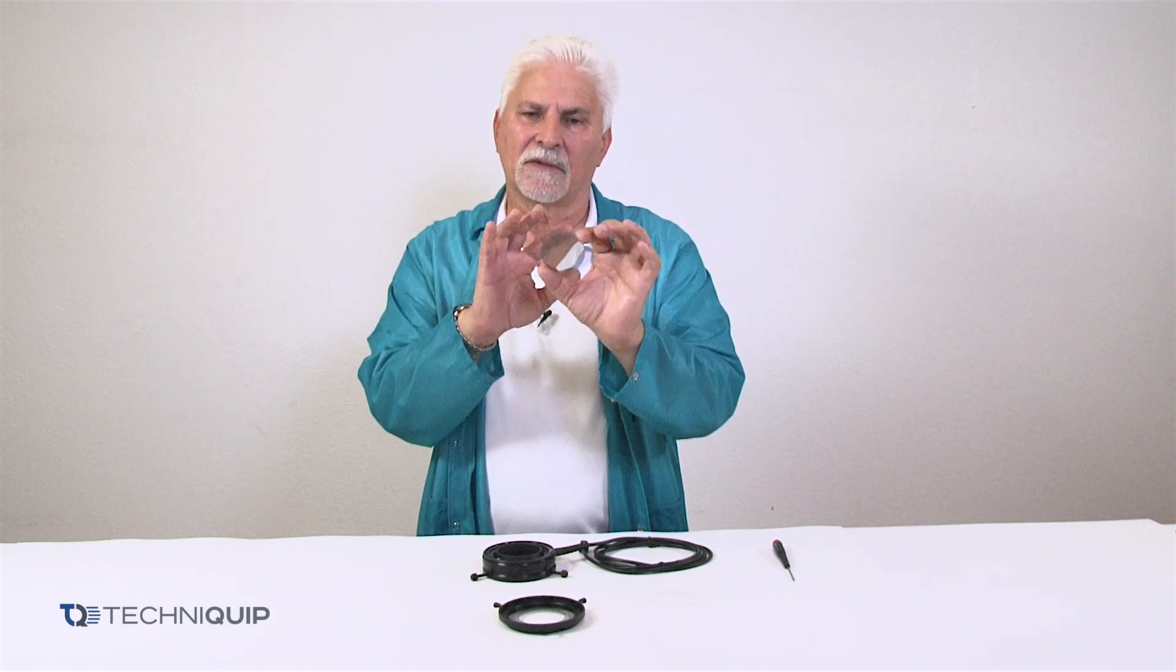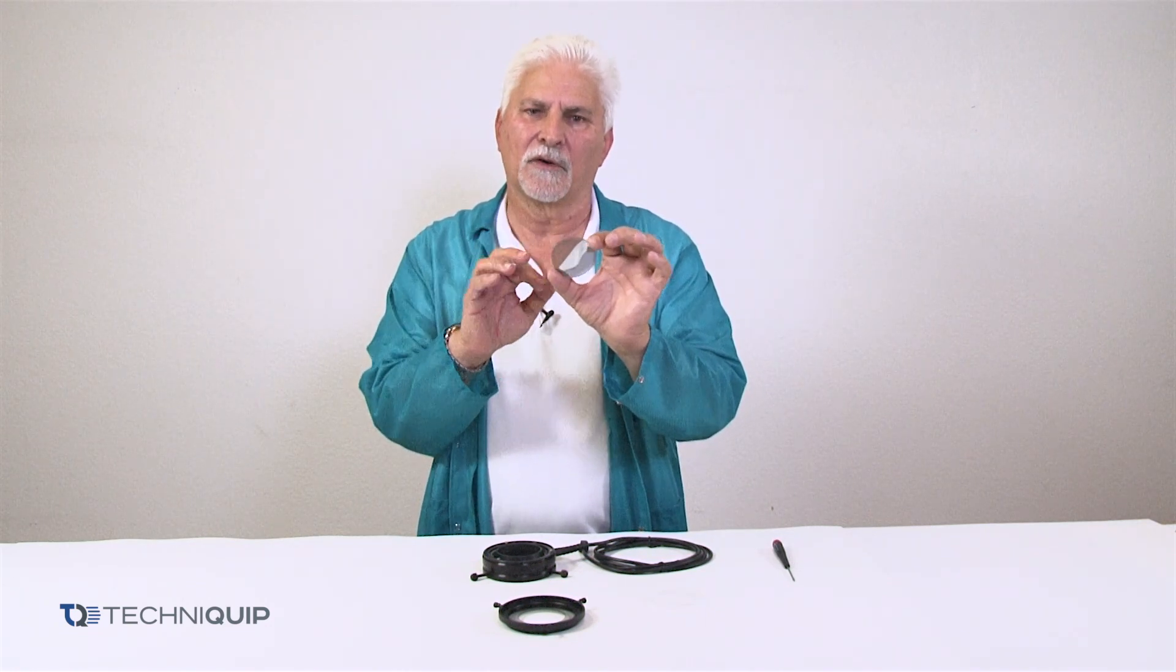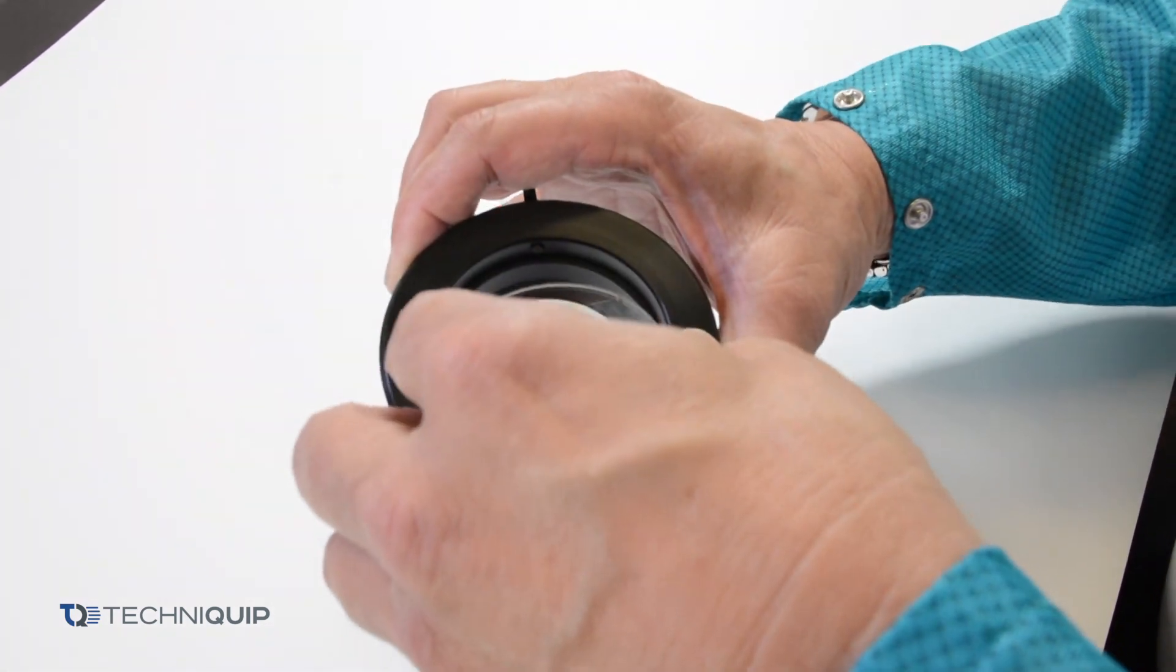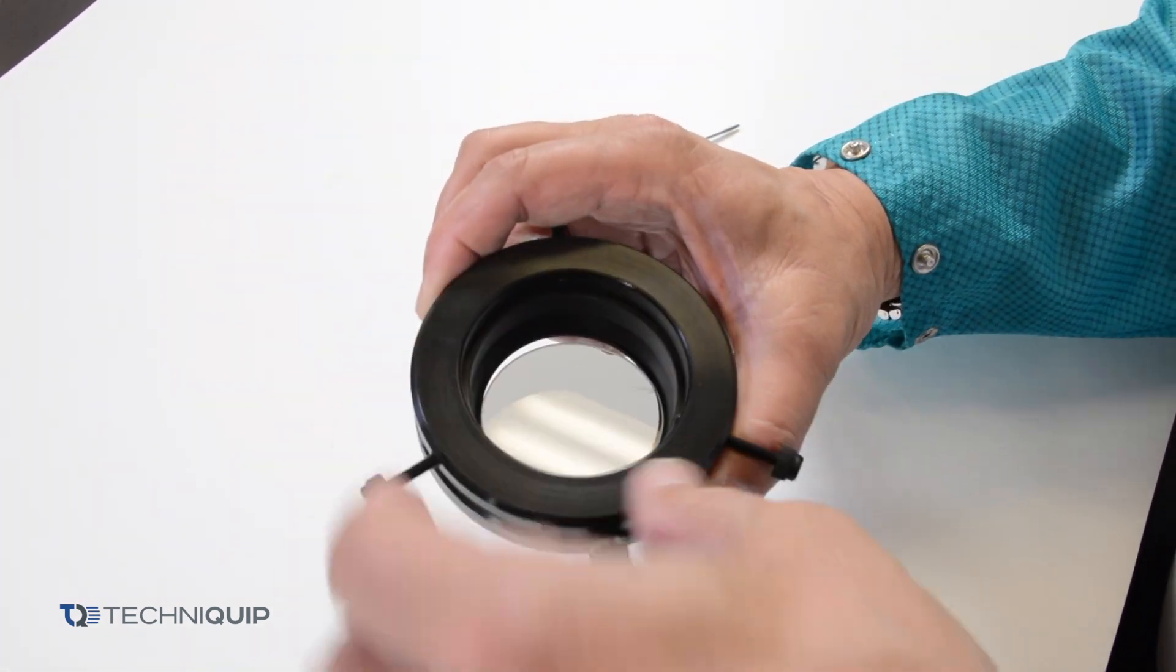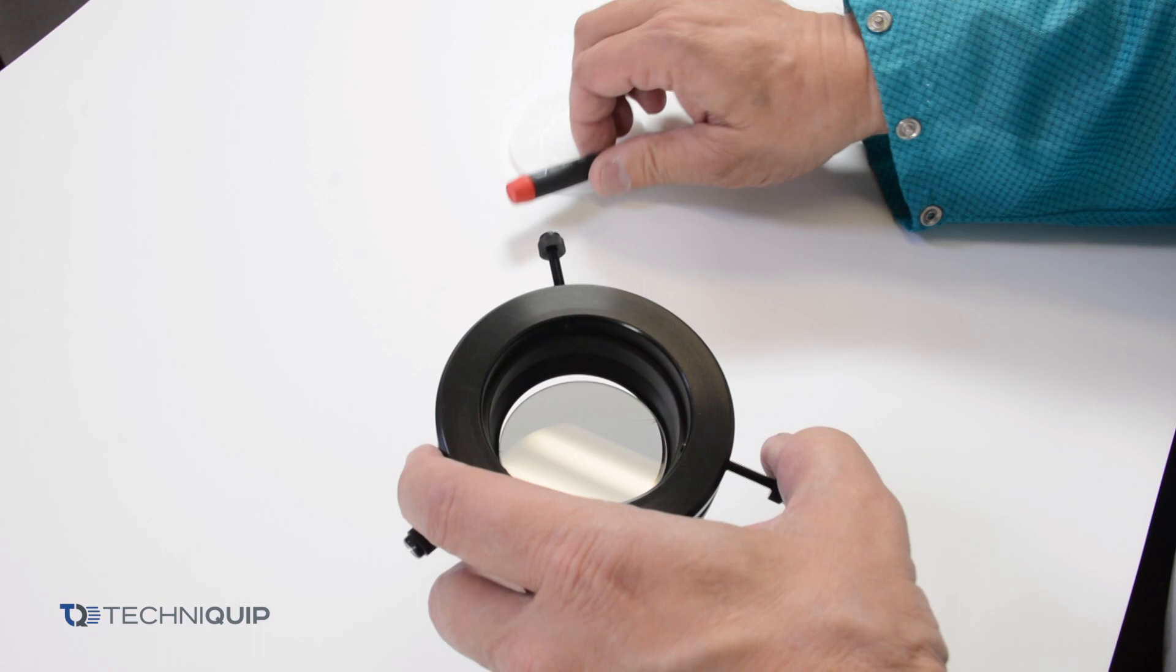Dust, scratches, anything on that surface because this surface is what you're going to be looking through with the microscope. If it needs to be cleaned, clean it now.